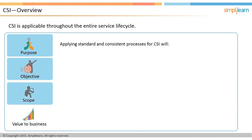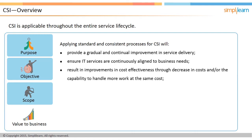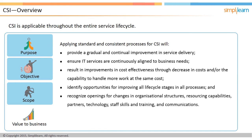Applying standard and consistent processes for CSI brings the following benefits to the business: provides a gradual and continual improvement in service delivery; ensures IT services are continuously aligned to business needs; results in improvements in cost effectiveness through decrease in cost and the capability to handle more work at the same cost; identifies opportunities for improving all lifecycle stages in all processes; and recognizes openings for changes in organizational structures, resourcing capabilities, partners, technology, staff skills and training, and communications.